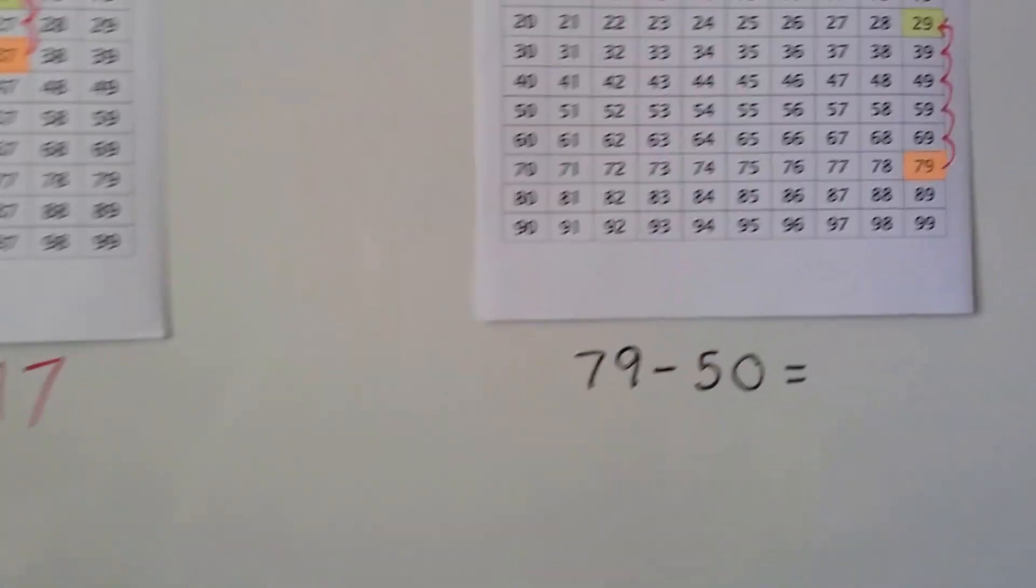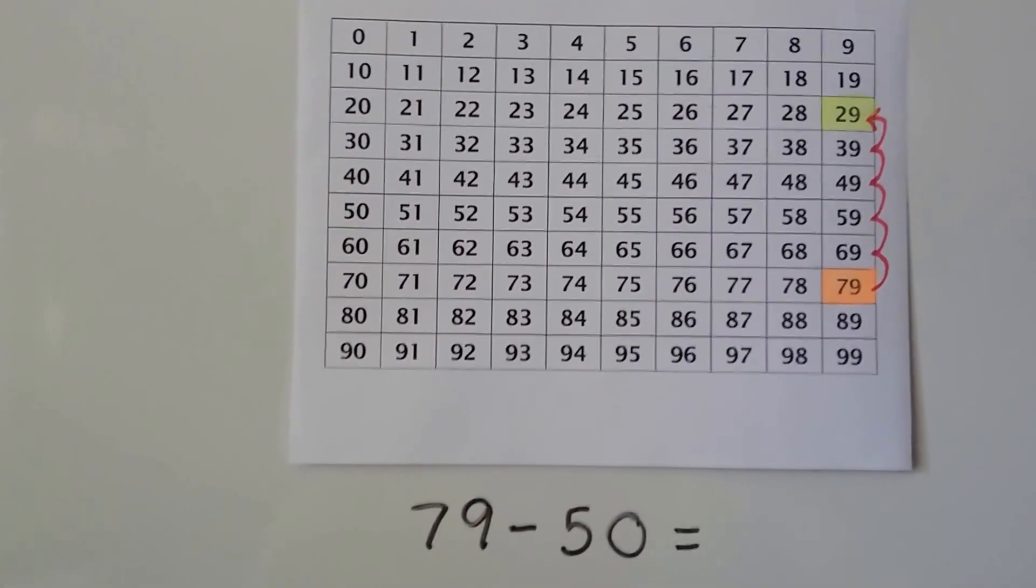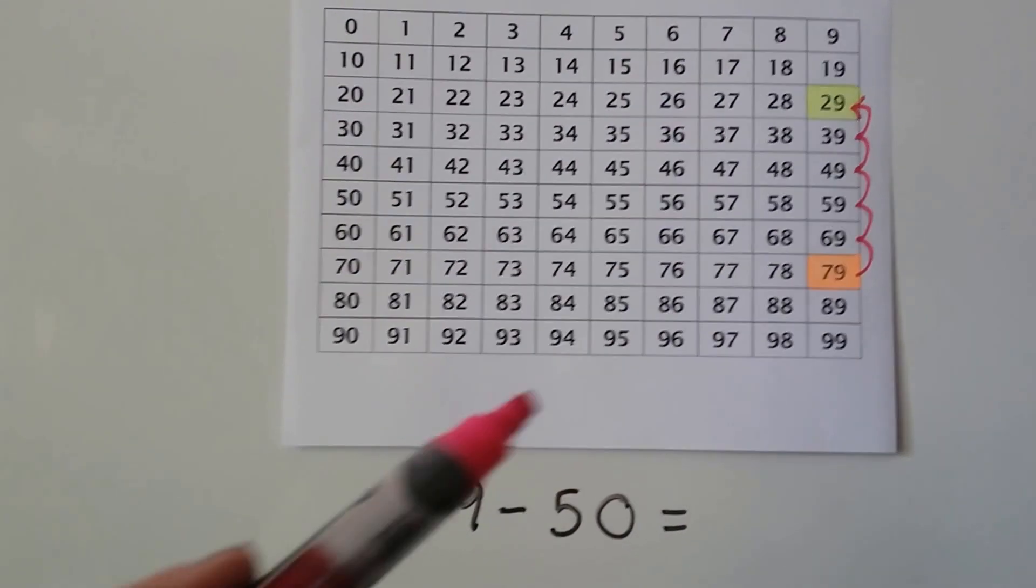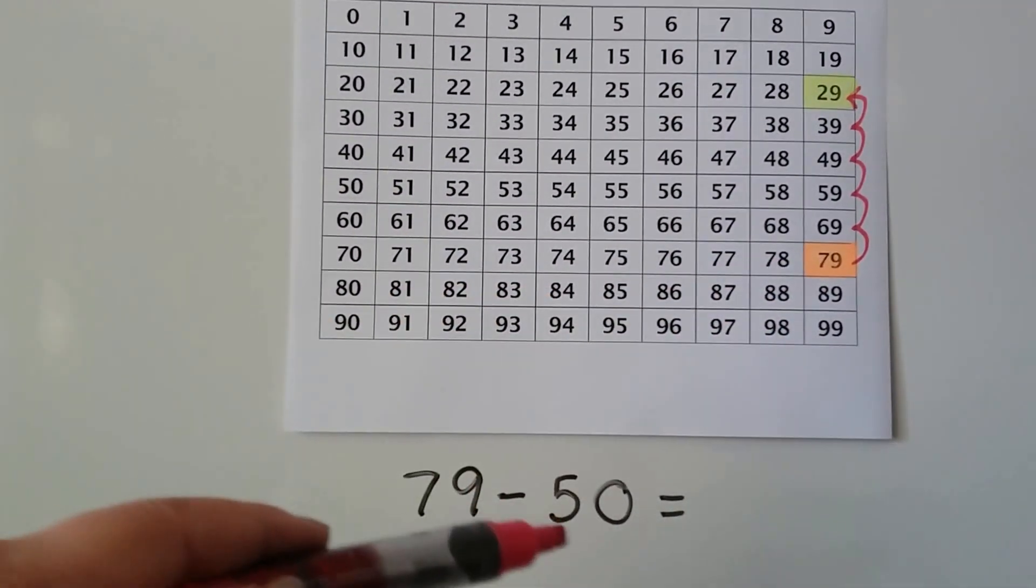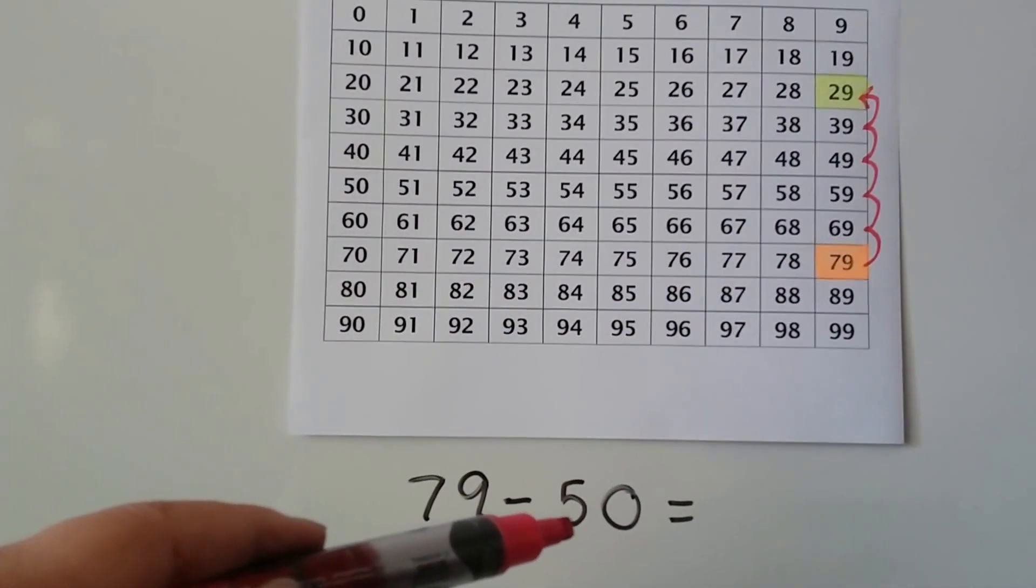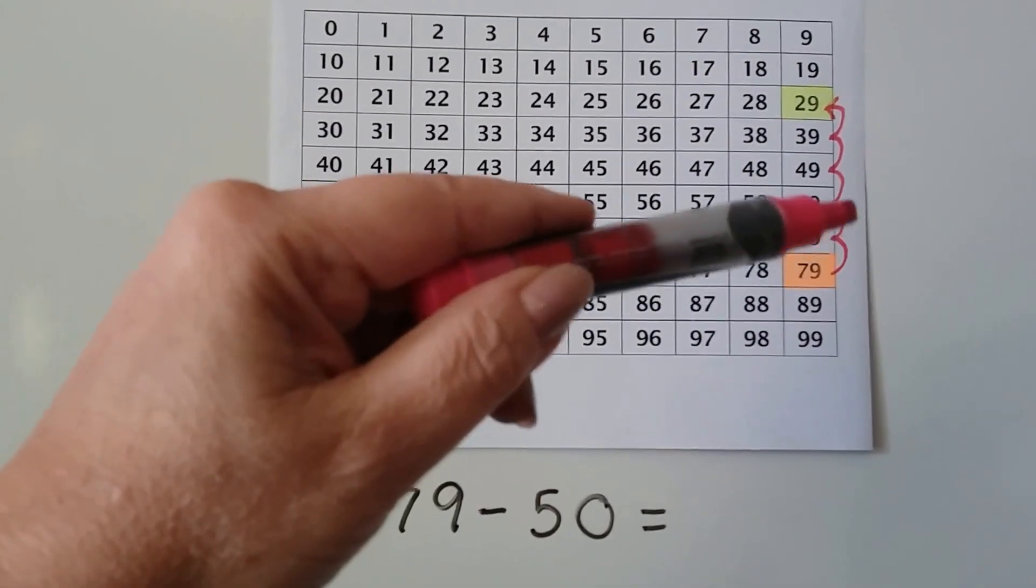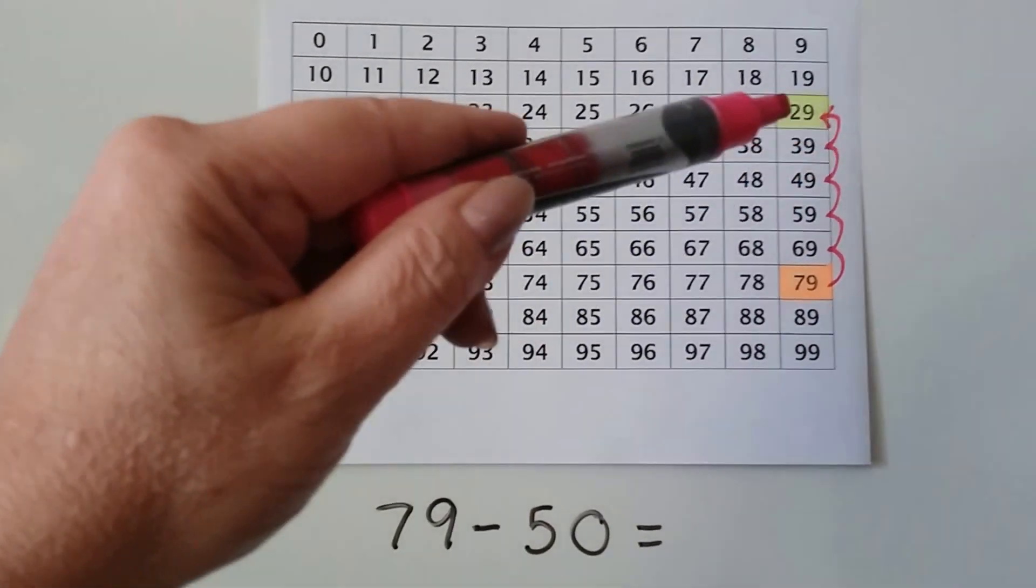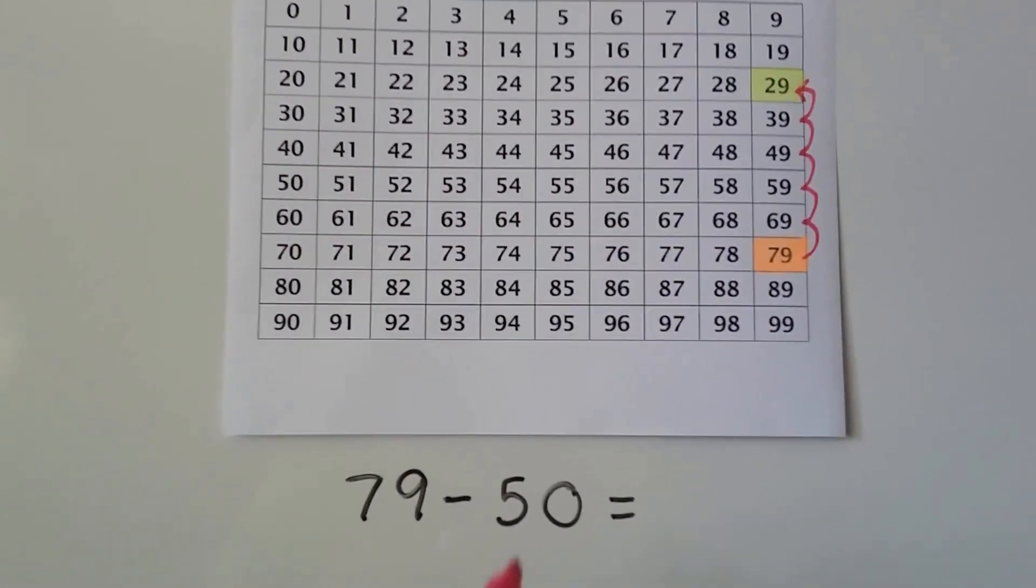Let's do this one. 79 minus 50. We find the 79, and we're gonna hop back five tens. So that's five rows: 1, 2, 3, 4, 5. That brings us to 29.